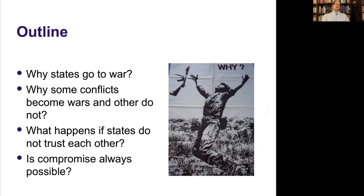One big aspect in understanding why fighting occurs is the idea of trust. What happens if states do not trust each other? Why does the absence of trust complicate things and make resolving conflicts more difficult? There might be external ways to provide trust, such as mediation. The last point is the idea of compromise — some things can be divided, other things cannot, and that indivisibility makes compromise really difficult.